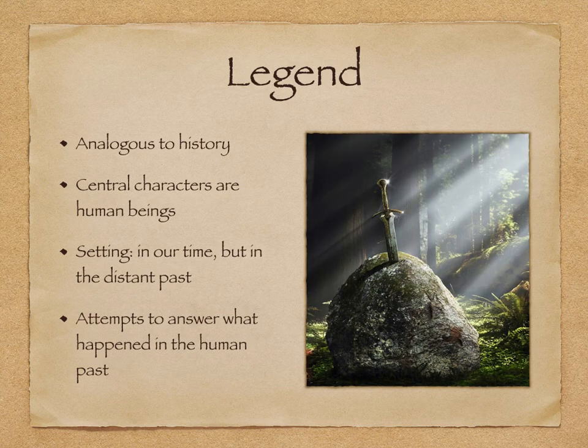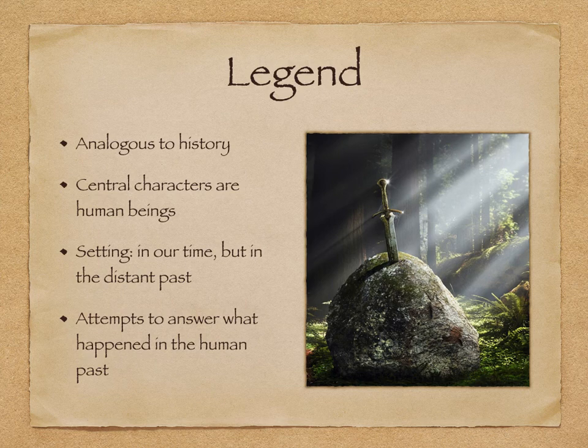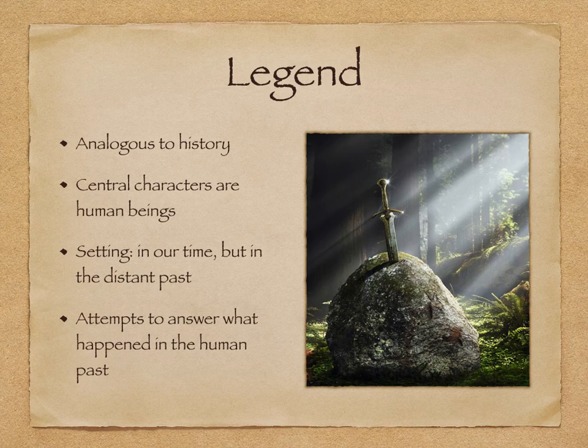Next we have legends. Legends are analogous to history, meaning they can be compared to human history and are usually done so to make things clearer and easier to understand. Legends attempt to answer the question: what happened in the human past? The central characters in legends are human beings, but they are not ordinary people — they are heroes and heroines, usually members of the aristocratic elite. They usually have some extraordinary physical or personal qualities, such as being stronger, more beautiful, or more courageous than ordinary people.